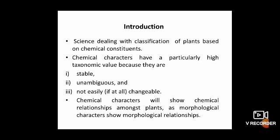The potential importance of chemical evidence in plant taxonomy has been suggested by both botanists and chemists, and this has become an important recent trend especially because newer techniques for quick analysis of plant material have been developed. Chemotaxonomists suggest that chemical characters have a particularly high taxonomic value because they are stable, unambiguous, and not easily changeable. Further, chemical characters show chemical relationships amongst plants in the same way as morphological characters show morphological relationships.